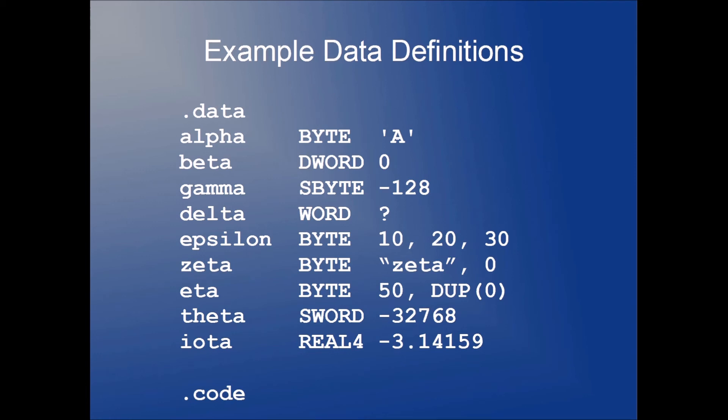We've also got variable theta, which is a signed word, which is a signed 16-bit variable. And we've assigned to it negative 32,768. So signed basically means that we can have a negative sign. Without the variable being a signed type, we would only be able to store values from zero through some positive number. We can't have negative values in unsigned data types. And iota is our example for a floating point variable. We're using that real four intrinsic data type. And we've initialized iota to negative 3.14159.